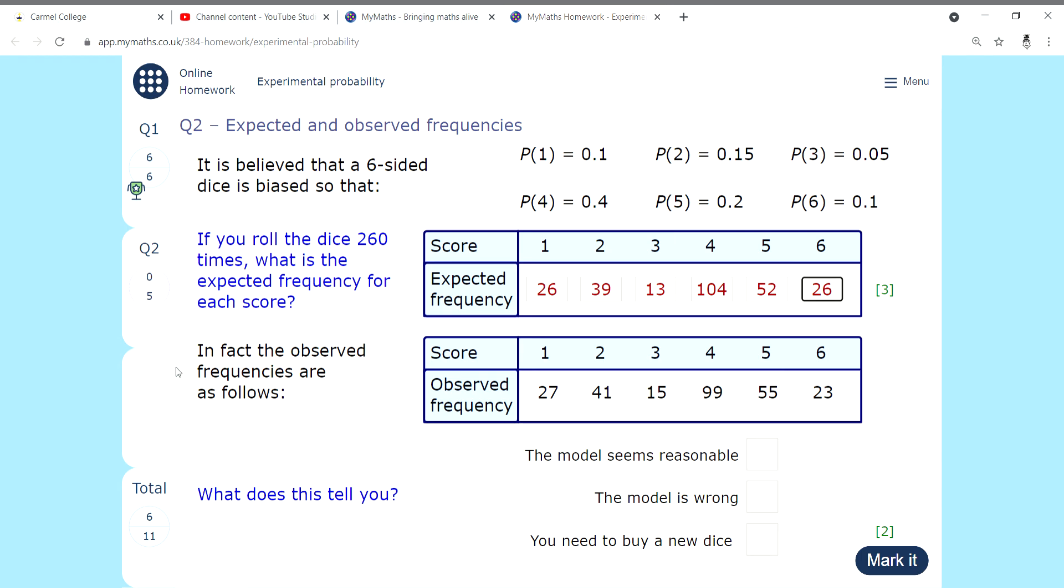Now if we look at, that's what we thought it was going to be. This is what has actually gone and happened when they rolled the dice. We expected 26 and actually got 27, that's not bad. 39 and 41, not bad. 13 to 15, okay. That's only five away, that's only three away, that's a pretty reasonable model, I guess. The model is reasonable. It is a biased dice, and if you were going to play a game, you would have to go away and buy a new dice to play the game. But the model itself is a reasonable model for this experiment.